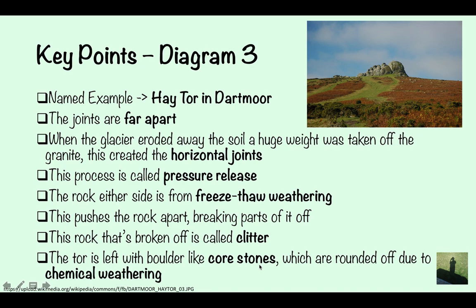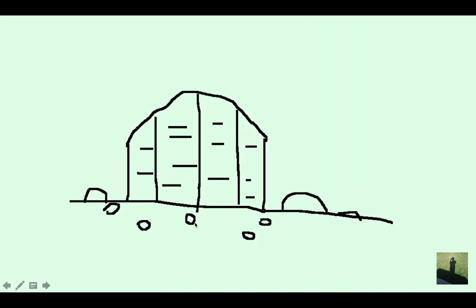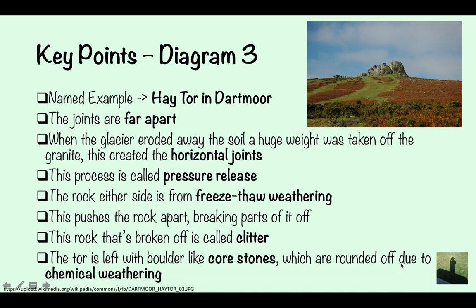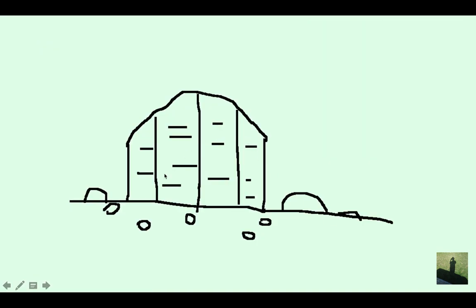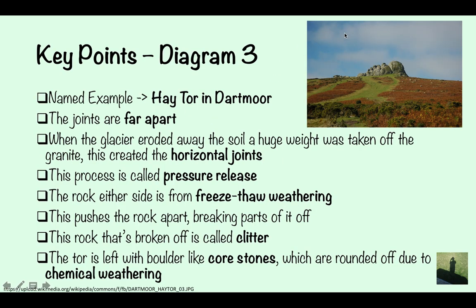And the rock that's broken off is called clitter. So this proper name for it is clitter. And that is only for granite. So only in granite is this bit called clitter. And the tor is left with boulder-like core stones, which are rounded off due to chemical weathering. So the core stone here is being rounded off due to chemical weathering. And you can see that on Hay Tor as well. So vertical joints, far apart. And the one that's furthest apart, much higher. You've got the clitter coming down all the hill. Coming all the way down the hill. And it's nice and round because of chemical weathering.